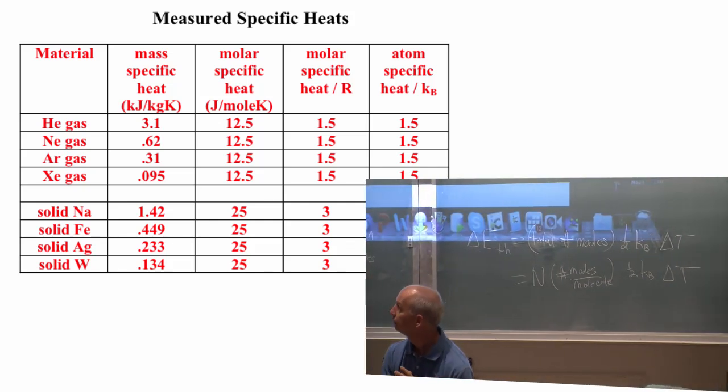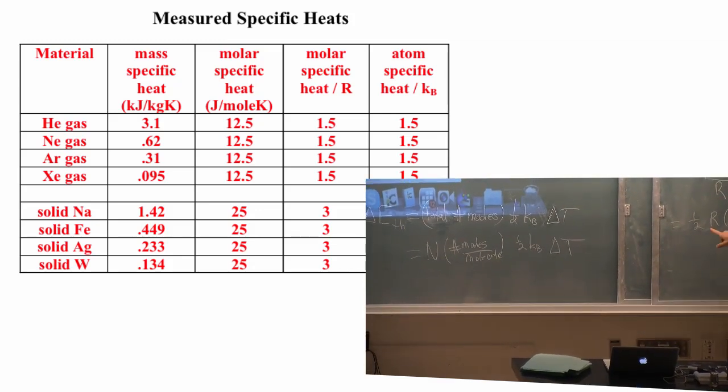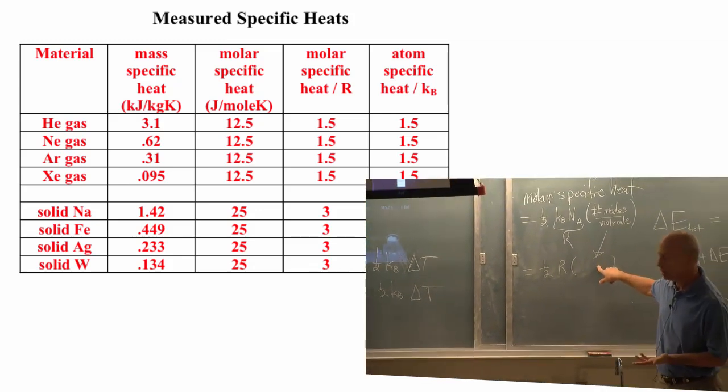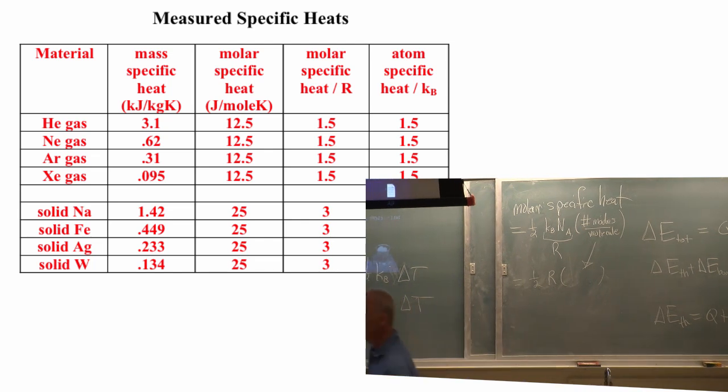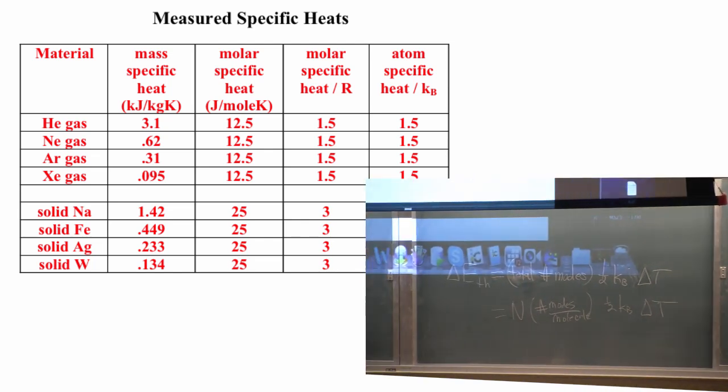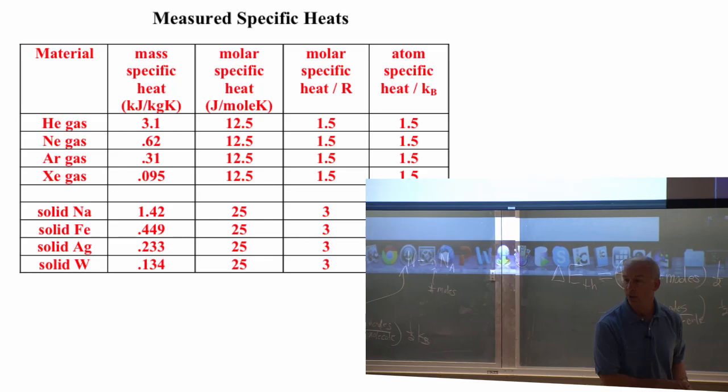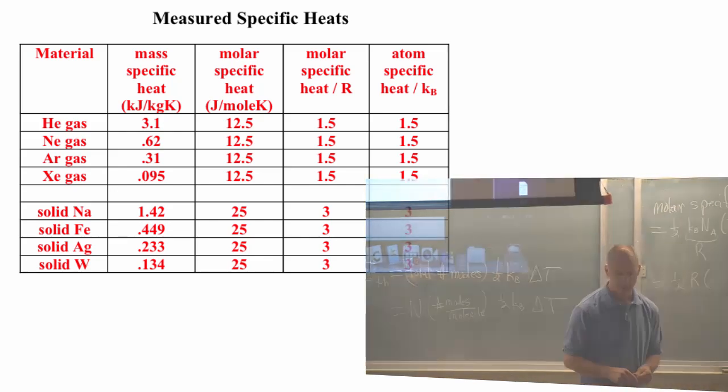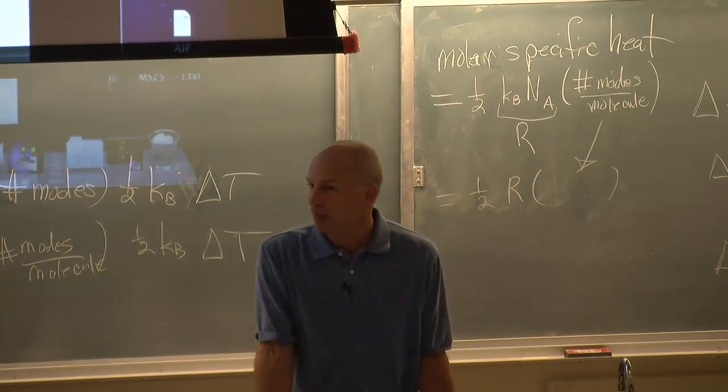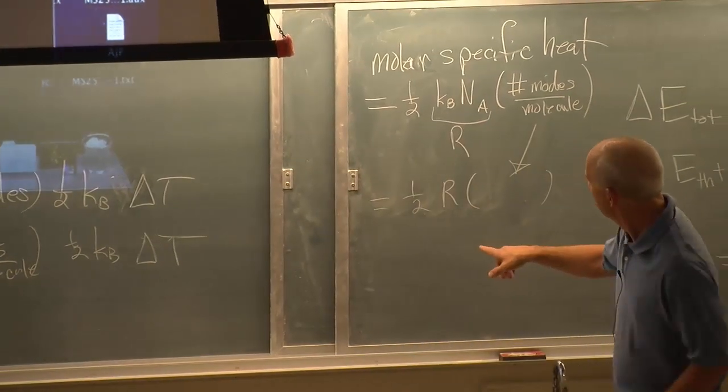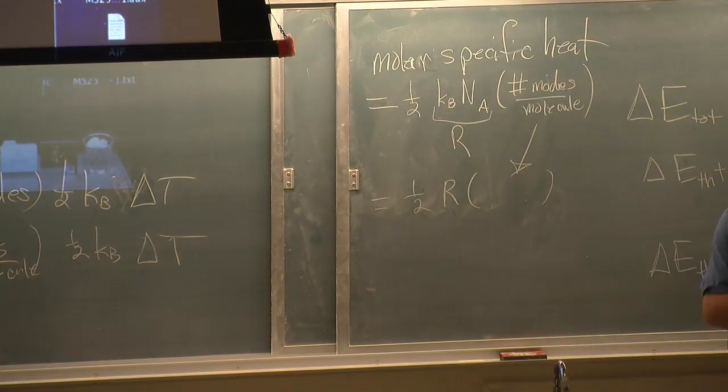And the molar specific heat of these gases is 1.5 times R. Because you bound the atoms in a solid into a solid, there are suddenly a bunch of potential energies that need energy also. It's not just the kinetic energy. So higher molar specific heat. Student: So your molar specific heat is always just half of the amount of modes? Instructor: The molar specific heat is half of the number of modes per atom or per molecule times R. Times the gas constant R.